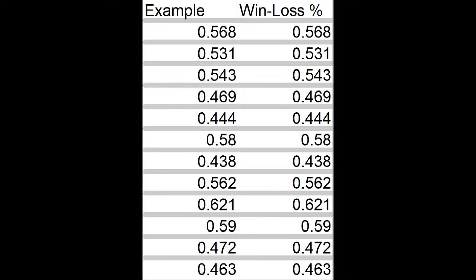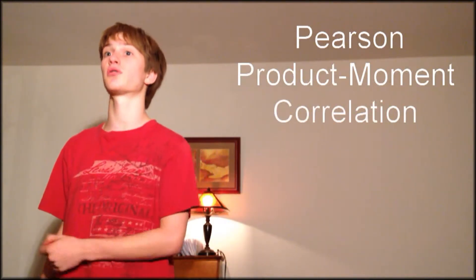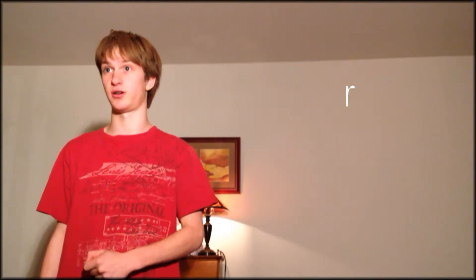To show my process, if we had an example statistic that over those years was exactly the same as the win-loss percentage, matched it perfectly, the graph would look like this, with the linear regression line going straight through the points, because the independent and dependent variables are exactly the same. The statistic that measures how accurate a line of best fit is, is the Pearson product-moment correlation coefficient, or r.